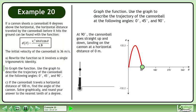At 90 degrees, the cannonball goes straight up and down, landing on the cannon at a horizontal distance of 0 meters.